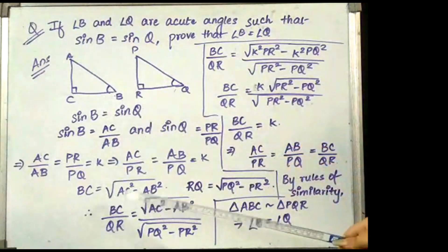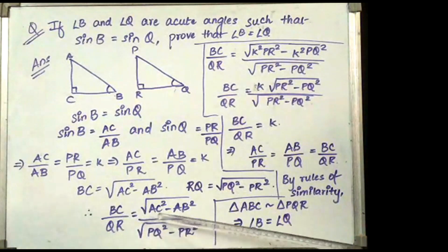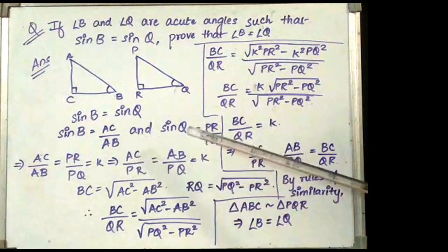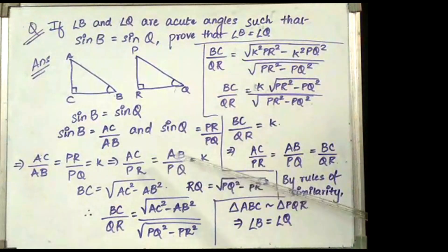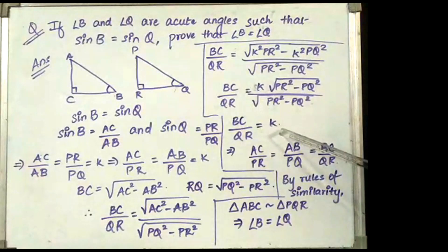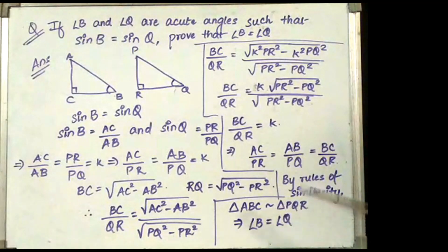Now BC can be written as √(AC² - AB²) and QR can be written as √(PQ² - PR²) by Pythagoras theorem. Writing BC by QR and substituting, we get BC by QR equals √(k²PR² - k²PQ²) divided by √(PR² - PQ²). Taking k common, BC by QR becomes equal to k, since these two terms cancel. Now AC by PR is equal to AB by PQ is equal to BC by QR. By the rules of similarity, the two triangles are equal because the ratio of their sides are equal, which implies that angle B is equal to angle Q.